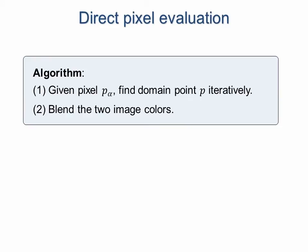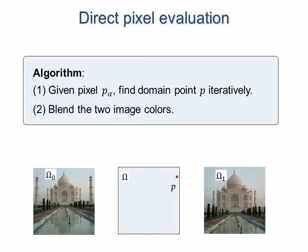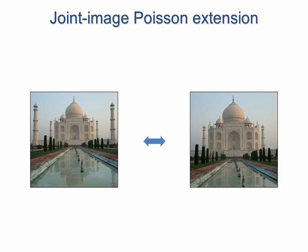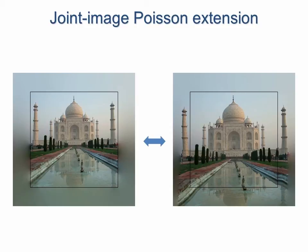In order to render our morph sequences, we present a novel per-pixel iterative algorithm that efficiently determines corresponding halfway image domain points and blends the colors from each input image. One challenge is that a halfway domain pixel p may map outside the bounds of an input image, which occurs frequently in examples involving panning or zooming motion. For such cases, we need plausible color values beyond the image boundaries to produce a smooth morph. We propose a technique that extends each image using gradient domain transfer of content from the other image, guided by the previously computed vector field. In this zooming example, the right image retrieves the two towers beyond its boundary by taking advantage of its computed correspondence to the left image.